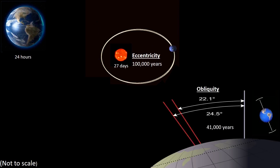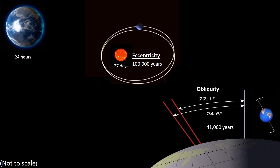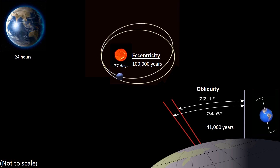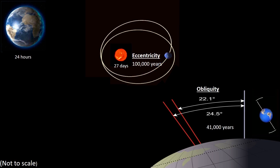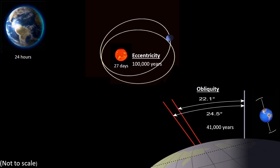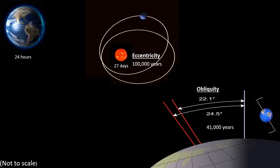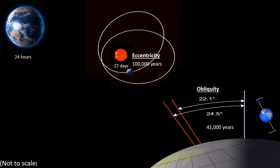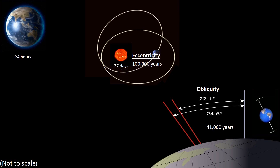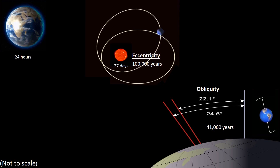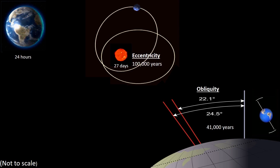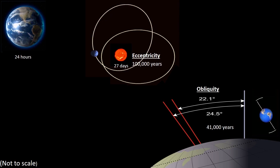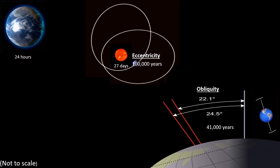The rotation of the Earth is at an angle to the vertical, and this angle changes over time. It moves from 22.1 degrees to 24.5 degrees and back again, over a time span of approximately 41,000 years.